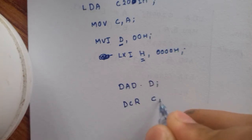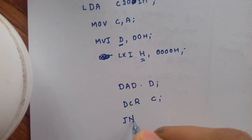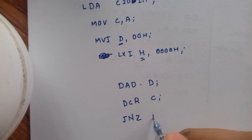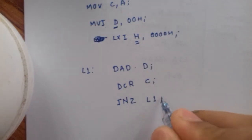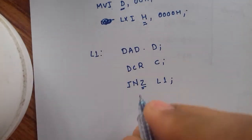We will jump to level one. The level one is here. We will jump to level one if we have no zero, meaning the zero flag is not set.